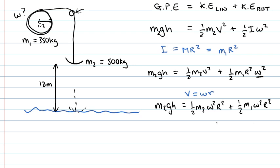So now what we have to do is rearrange this to make omega the subject of the equation. So multiplying by 2 on both sides gives us 2M2gh equals omega squared R squared times M1 plus M2.